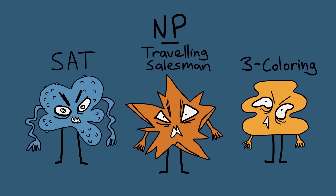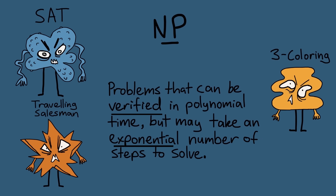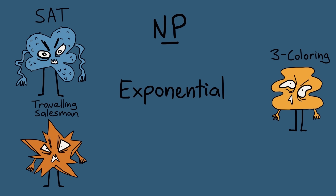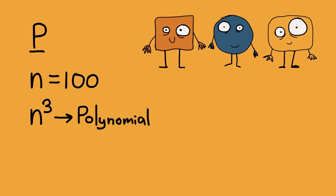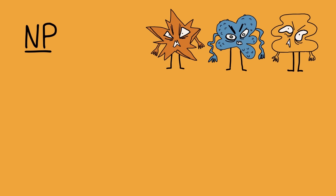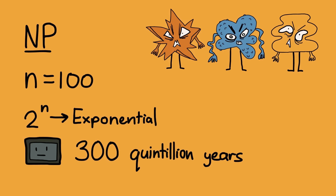NP, on the other hand, is the class of problems that can be verified in polynomial time but may take an exponential number of steps to solve. An exponential is when the input number n is in the exponent or the power, like 2 to the power of n. Now here's the important difference — computers take an extremely long time to solve these kinds of problems. To demonstrate the difference: if a problem is in class P with 100 inputs and its algorithm is proportional to n to the power of 3, it'll solve its problem in about three hours. If it's an NP problem with completion time proportional to 2 to the power of n, it'll take roughly 300 quintillion years to solve — longer than the age of the universe.